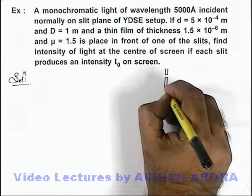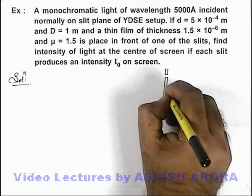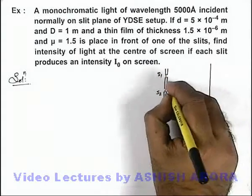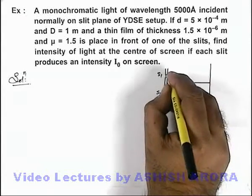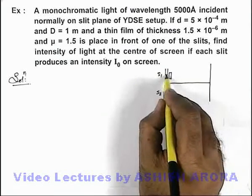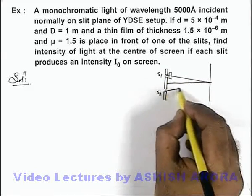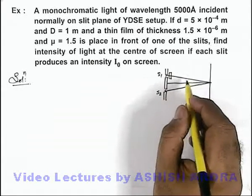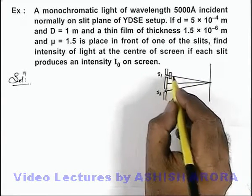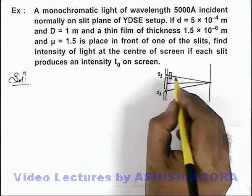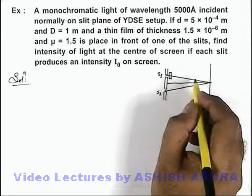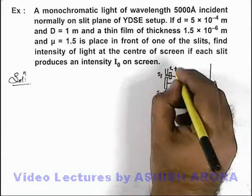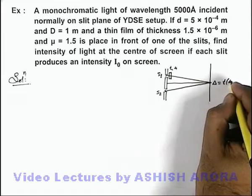We can draw the YDSE setup with slits S1 and S2 and the screen. If we place a thin film in front of one of the slits, then at the center, physically the two waves are traveling equal paths, but optically, due to the thin film, the wave from S1 will be traveling a greater optical path. So the path difference here will be due to the thickness t and refractive index μ of the film, which is given by t multiplied by (μ - 1).